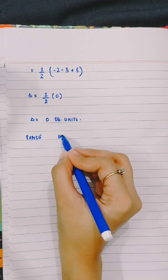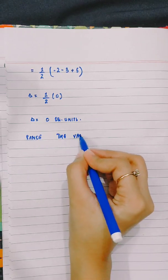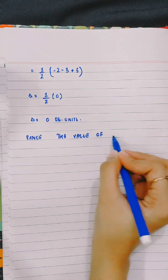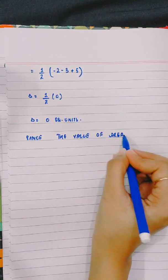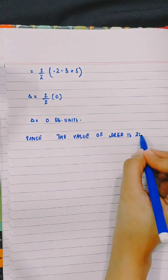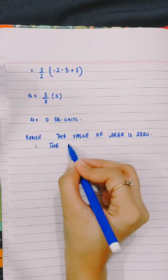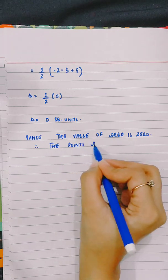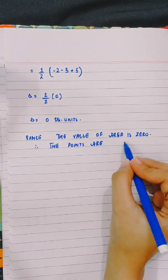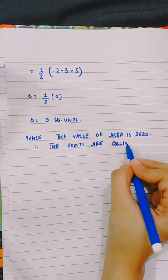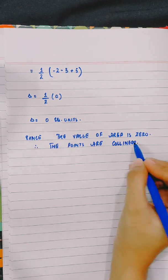Since the value of area is 0 square units, therefore the points are collinear.